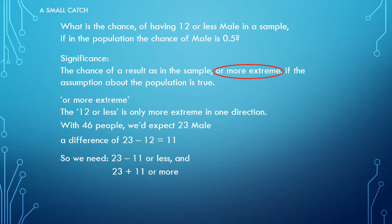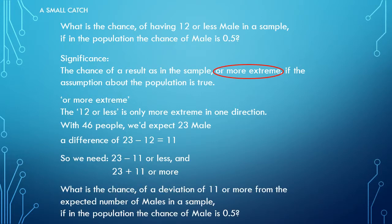So to make the question slightly more complicated but more correct is: what is the chance of a deviation of 11 or more from the expected number of males in a sample, if in the population the chance of male is 0.5?